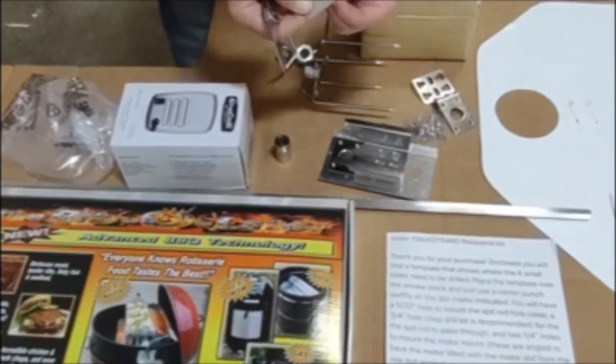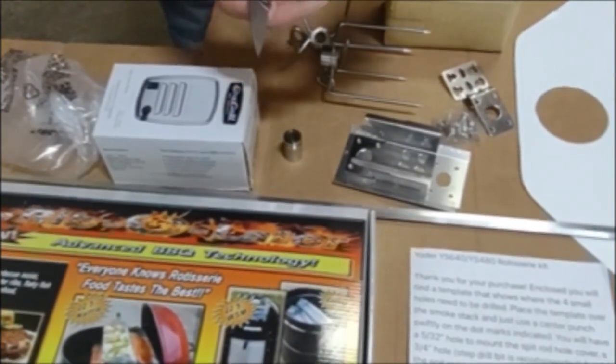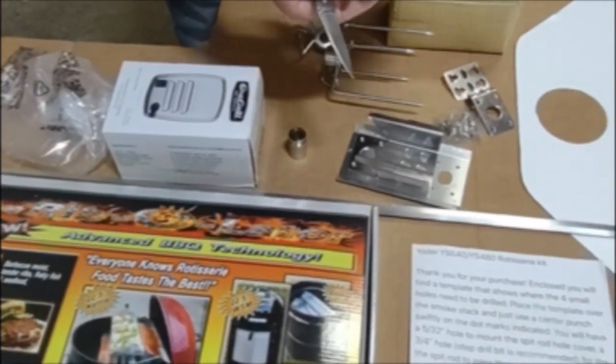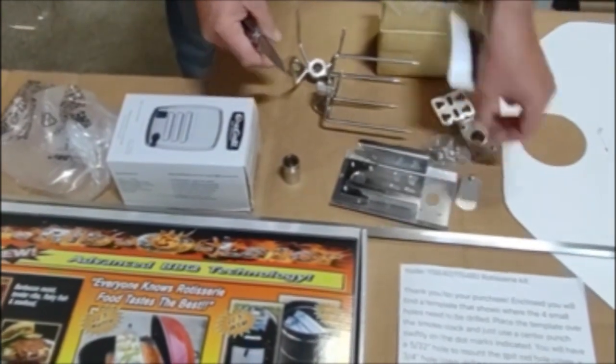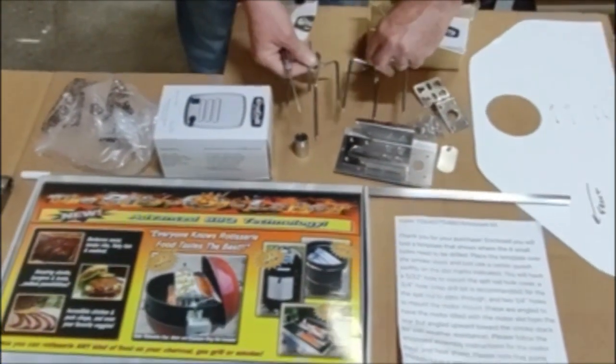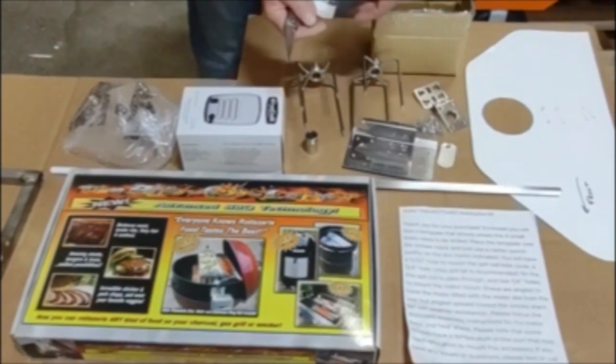And then when you're not using it, there's a stainless steel little dog tag that will go in place over the hole. And of course stainless steel tines for chickens and turkeys and whatnot.